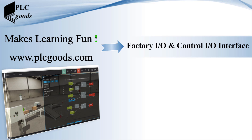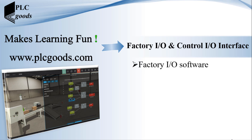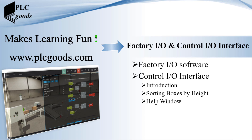In this video, Factory IO software will be used to design a simple industrial process, and then the Control IO interface will be explained and used to control the sorting boxes project, which was explained during previous courses. This video will be useful for those who want to use Factory IO software to simulate an industrial process and don't have any real PLC or simulator.